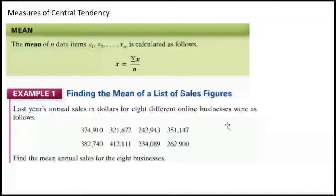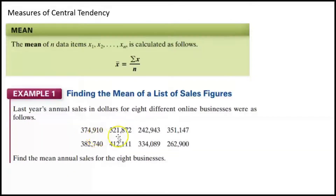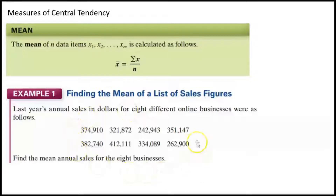We have an example. Last year's annual sales in dollars for eight different online businesses were as follows: sales of 374,910, 321,872, and so on. It says find the mean annual sales for the eight businesses. What I need to do is add up all eight values and then divide by eight.